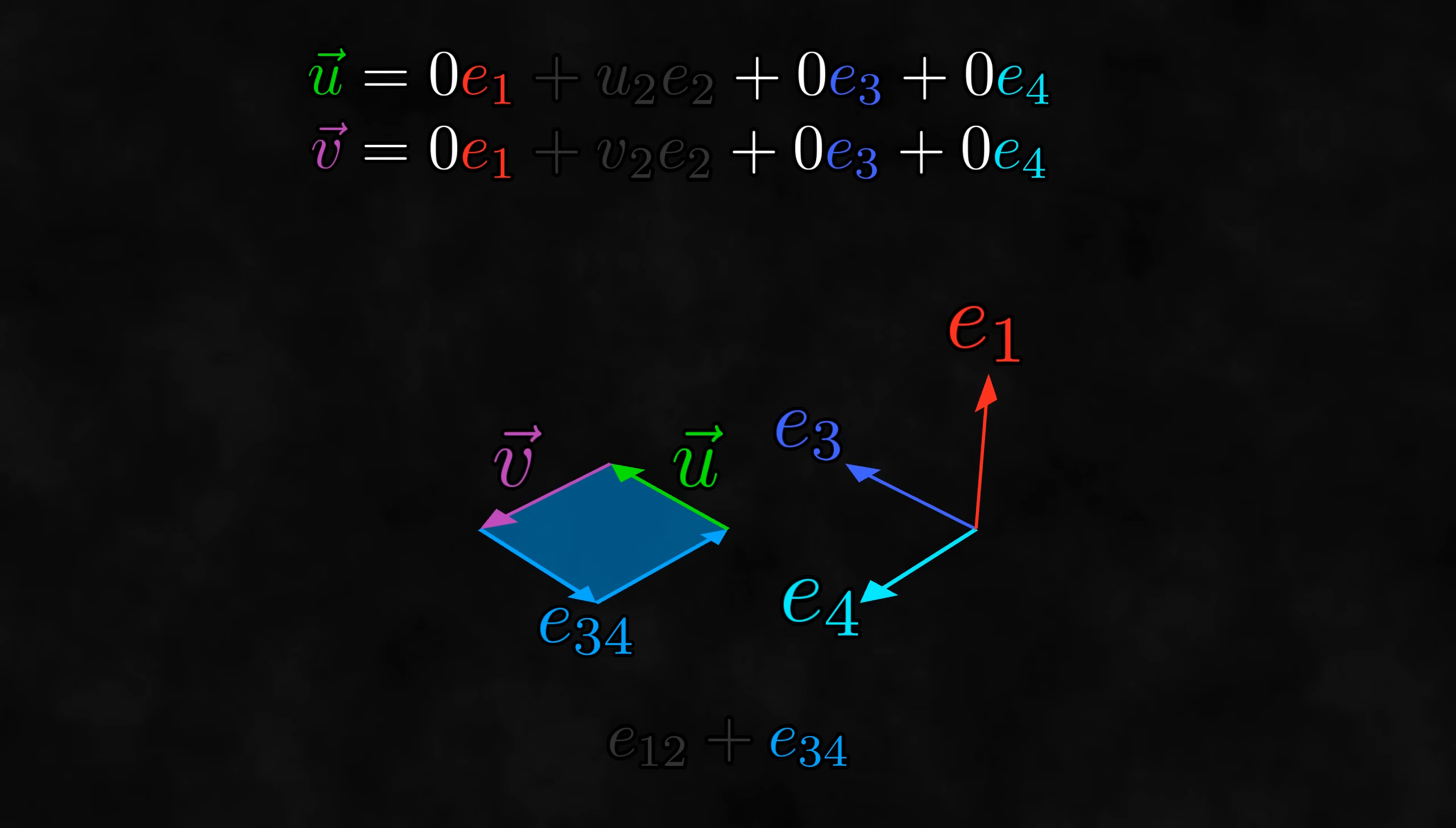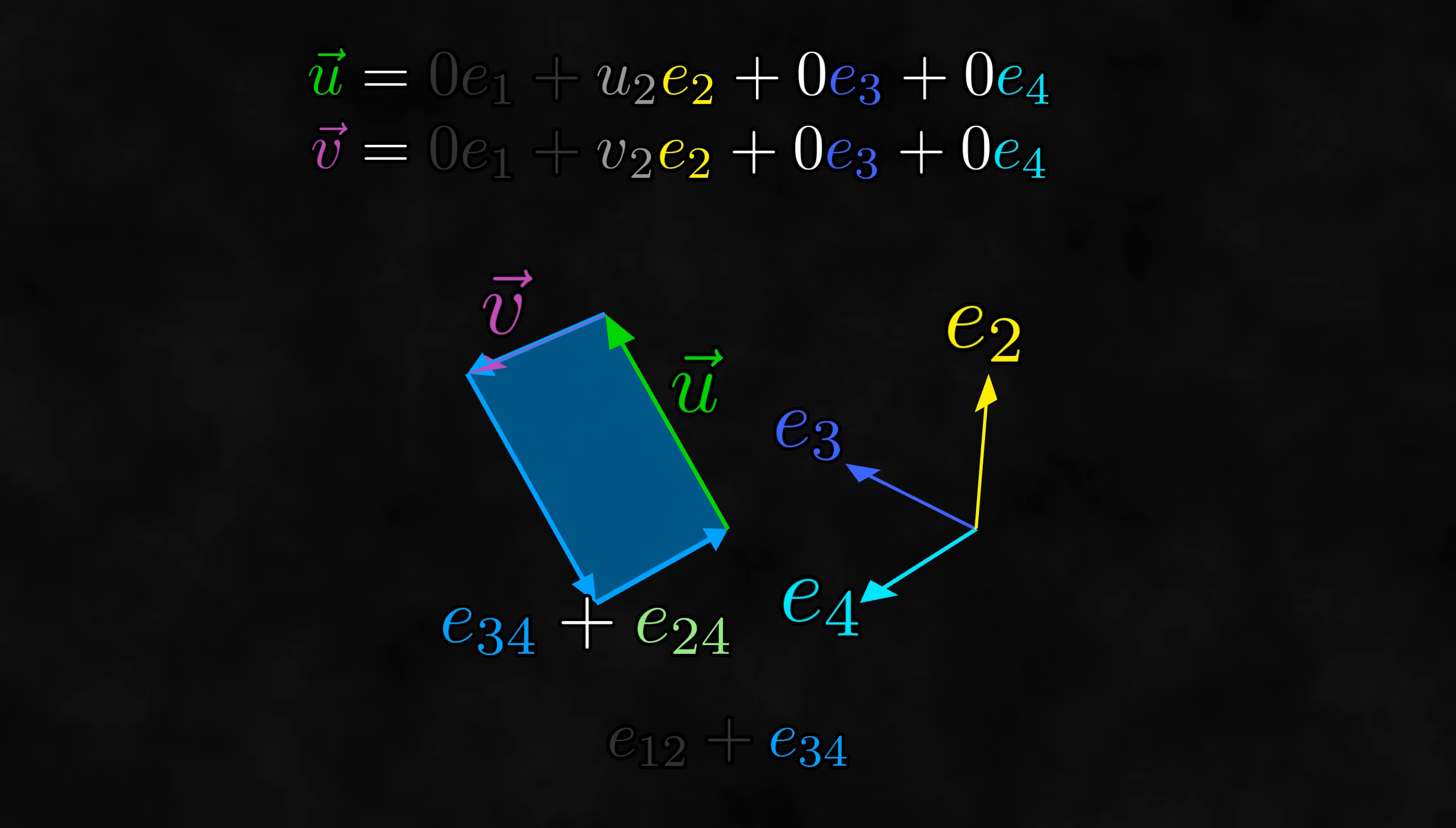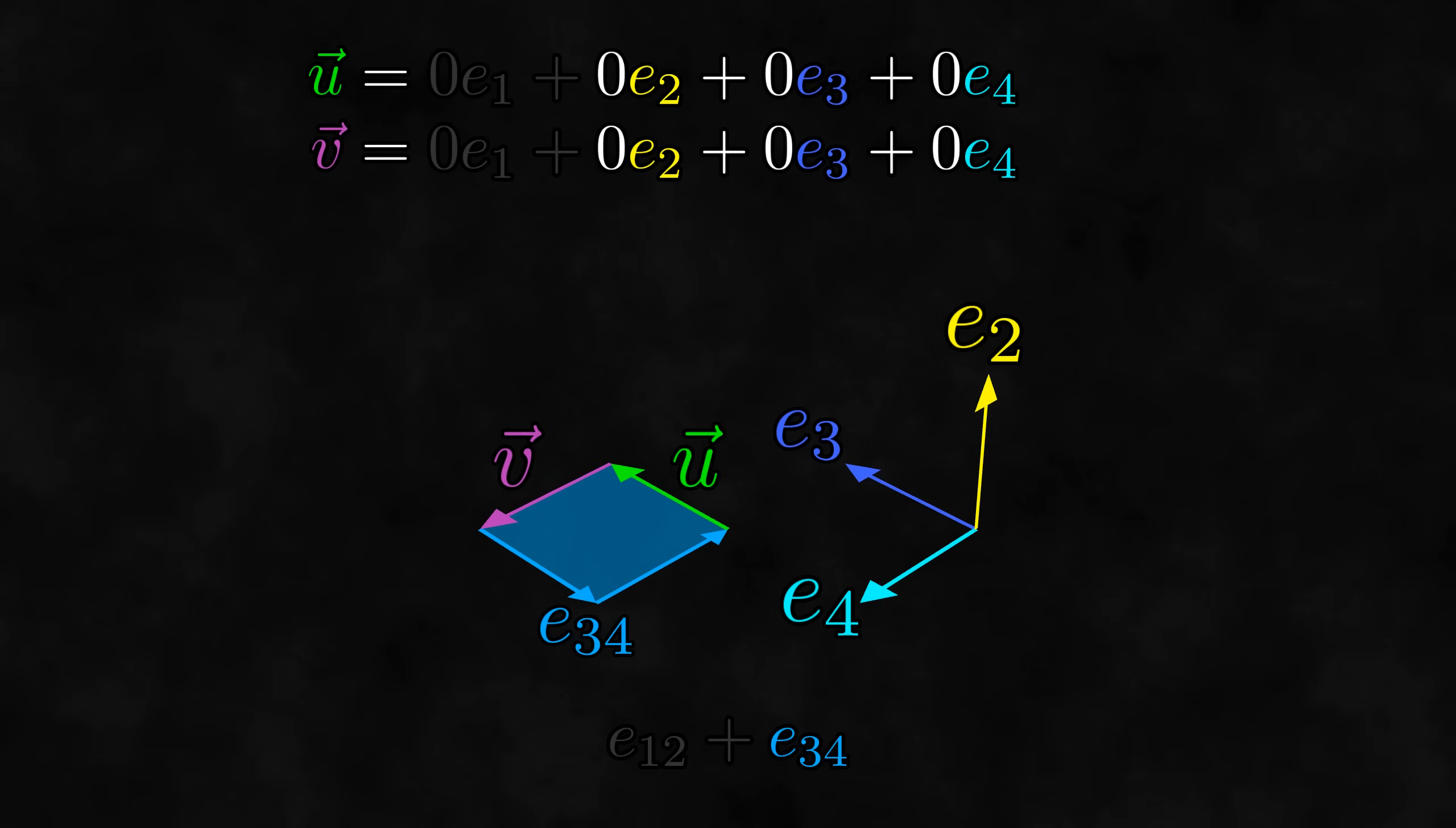Finally, we can look at the subspace containing E2, E3, and E4, and by the same argument, the E2 components of the vectors must be zero.